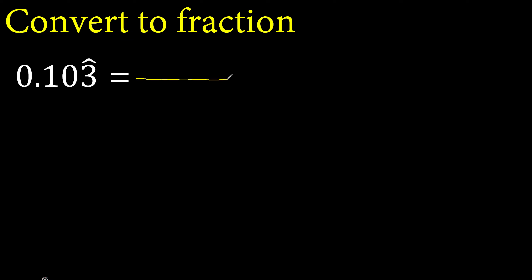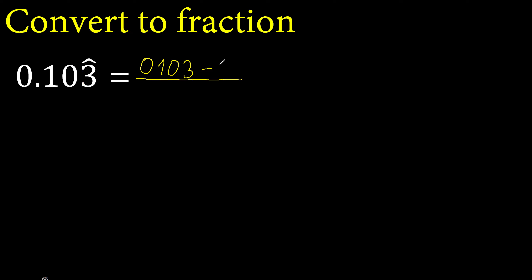First, the number without point or symbol, like this. Minus the number outside the symbol without point. Eliminate the zero on this side. After the point, there is one number under the symbol.